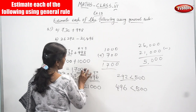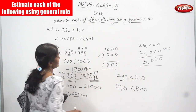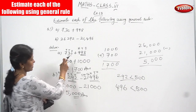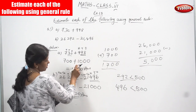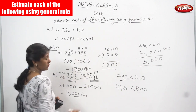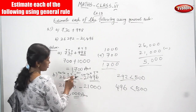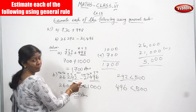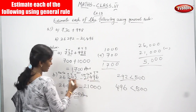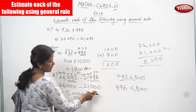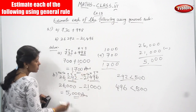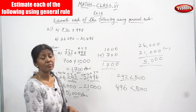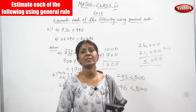The first question answer is 1,700. For question A, 730 plus 998: the estimation of 730 is 700 and 998 becomes 1,000, so the answer is 1,700. For question B, 26,292 minus 21,496: the estimation is 26,000 minus 21,000, and the answer is 5,000. I think you understand the concept well.